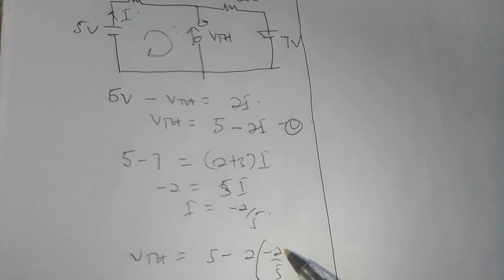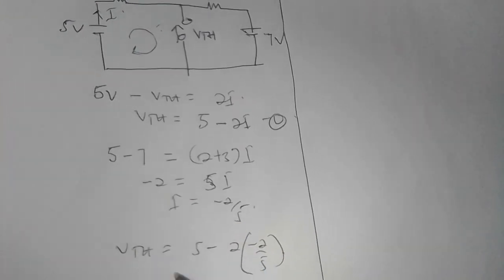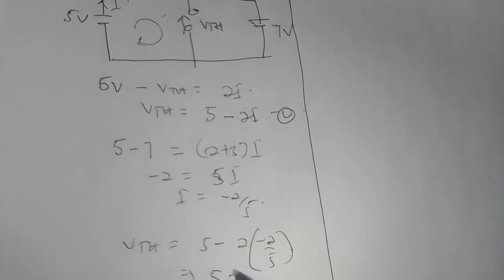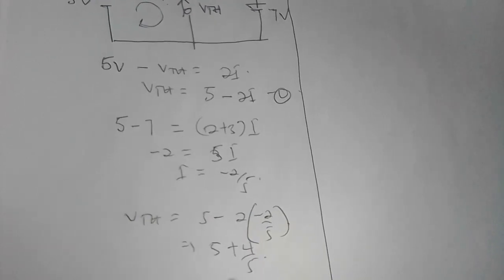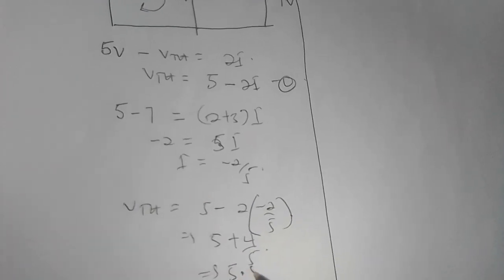My VTH is simply equal to 5 minus 2 times negative 2 over 5, and that's going to give me 5 plus 4 over 5, which is equal to 5.8 volts. So our VTH in volts is 5.8 volts.